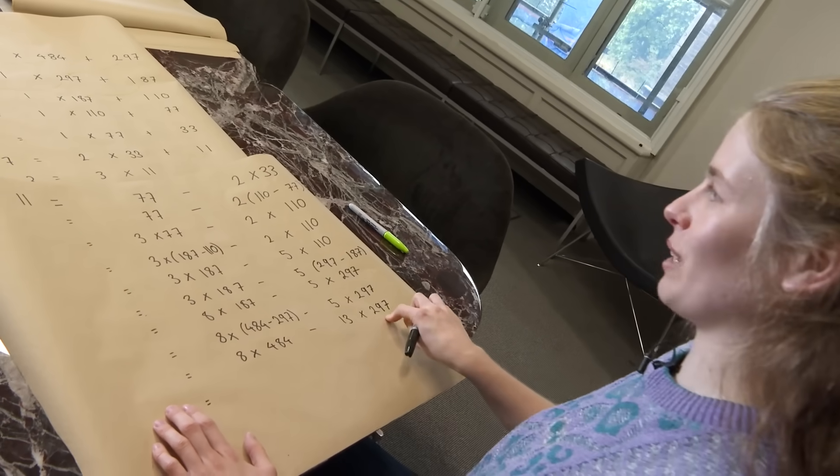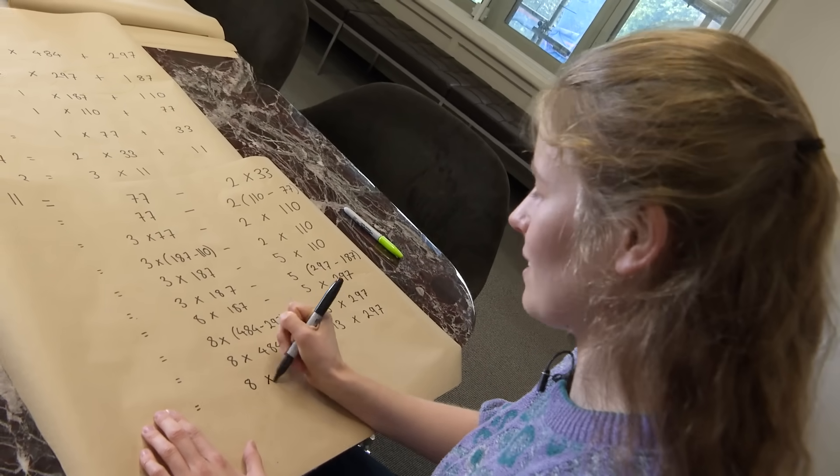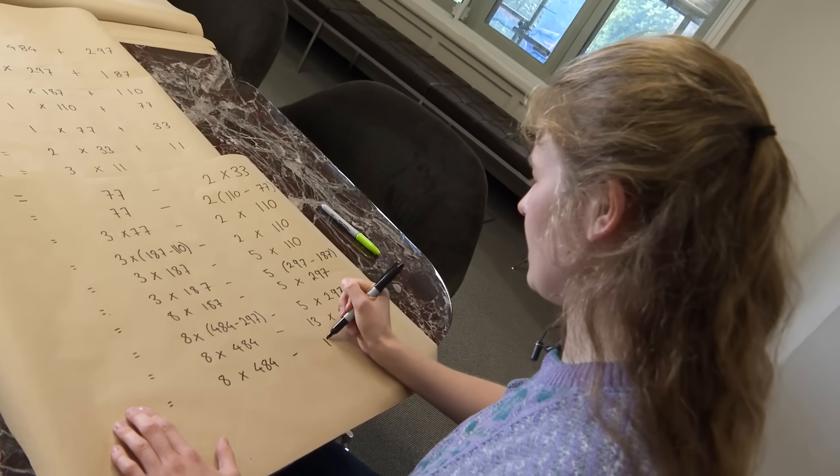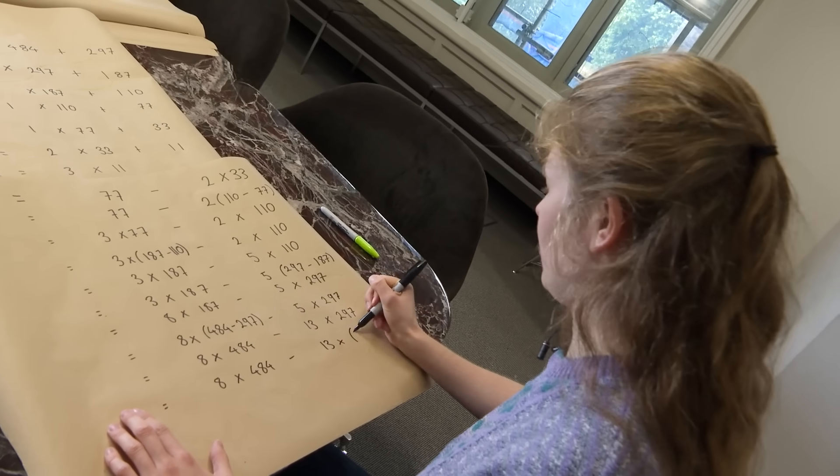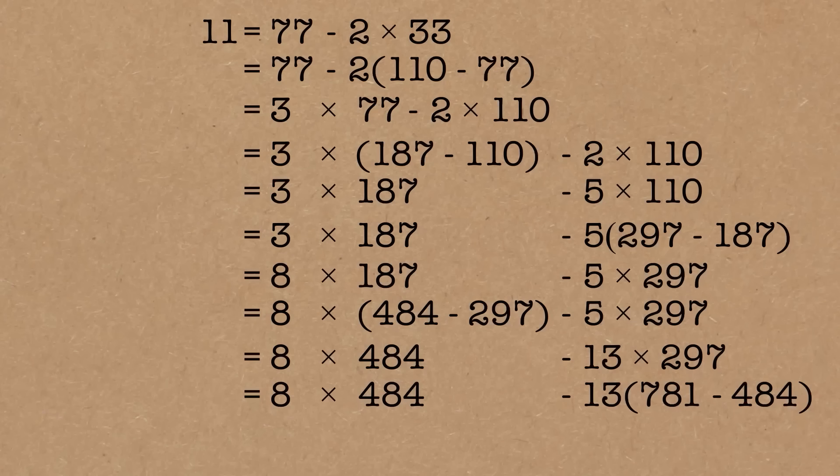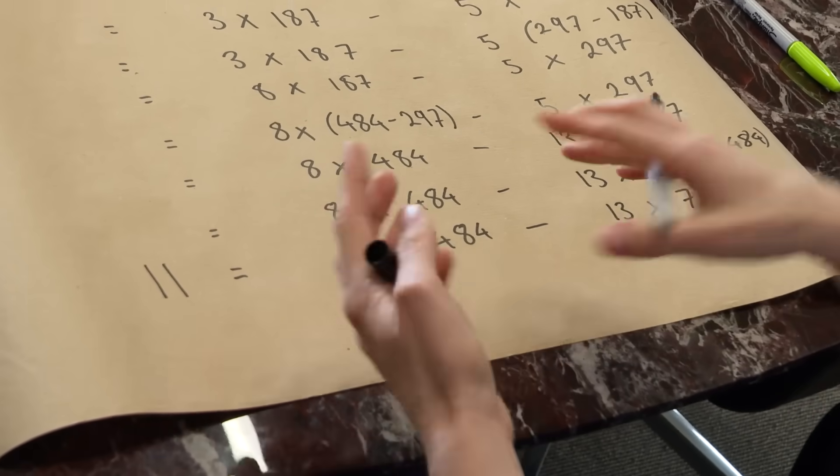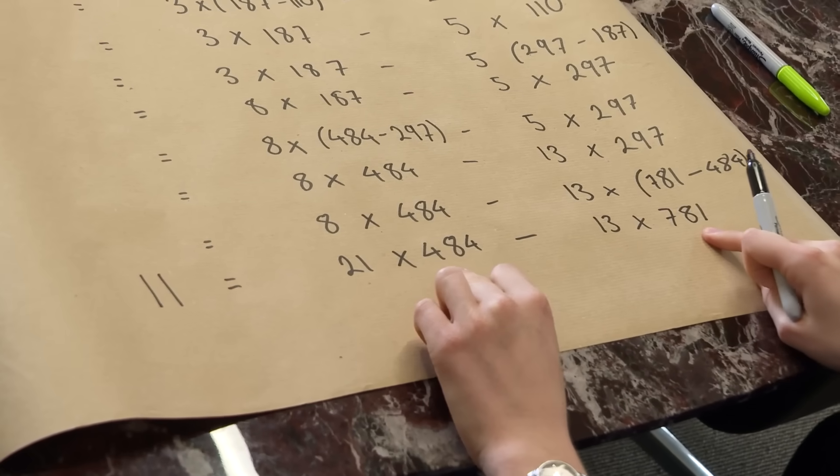And then final step, we're going to replace the 297. So this becomes 8 times 484 minus 13 times 781. So we have now reversed Euclid's algorithm. And we've got our greatest common divisor as the sum of two multiples of our two original numbers.